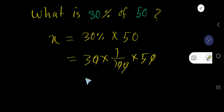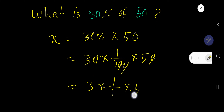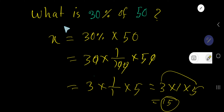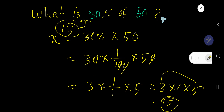Canceling the zeros, we get 3 times 1 over 1 times 5, which is 3 times 5. That is fifteen. So fifteen is thirty percent of fifty.